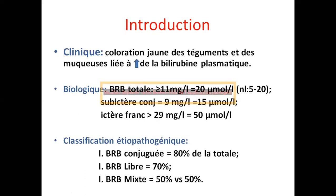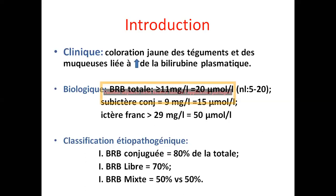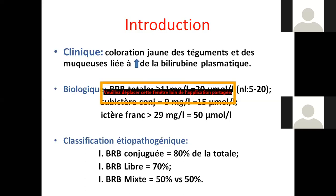Donc, ictère avec une augmentation du taux de bilirubine dans le sang, normalement inférieure à 11 mg. Entre 15 et 29 mg par litre, nous parlons d'un sub-ictère, visible seulement au niveau des muqueuses. L'ictère franc est supérieur à 29 mg par litre ou 50 micromoles. Sur le plan classification étiopathogénique, soit nous avons un ictère à bilirubine conjuguée (plus de 80% de la totale), soit bilirubine non conjuguée (libre, lorsque 70% est libre), et les ictères à bilirubine mixte.